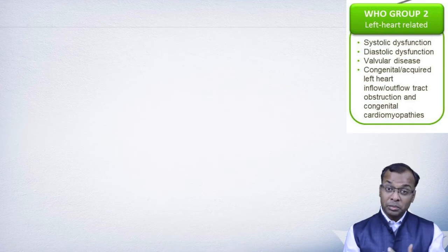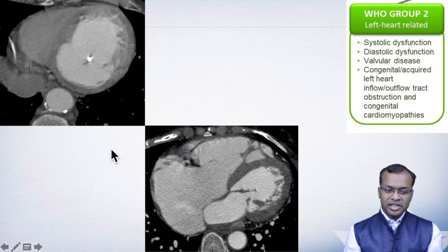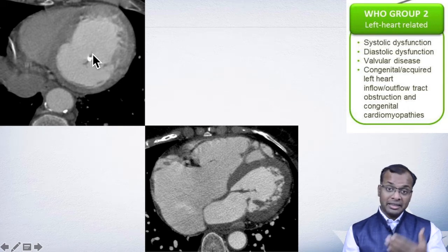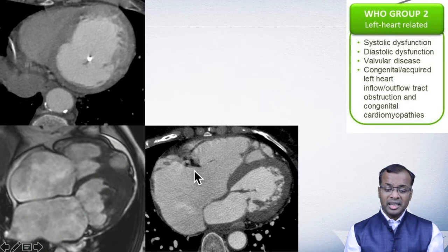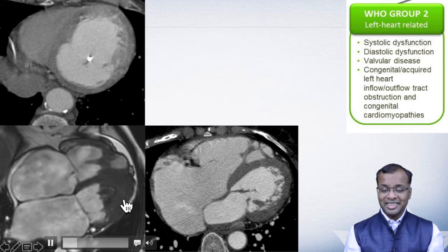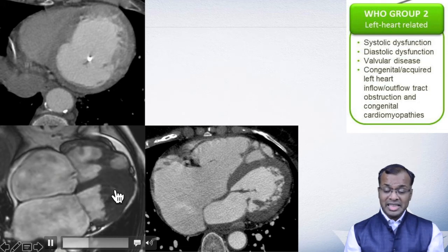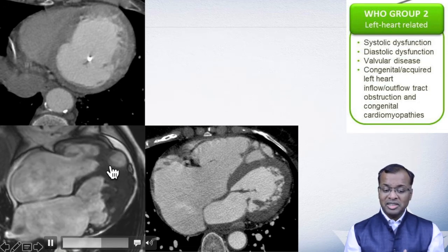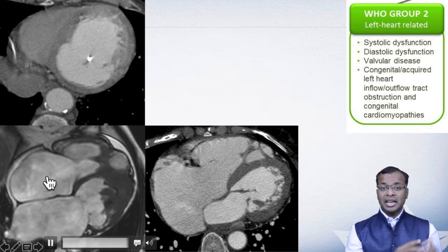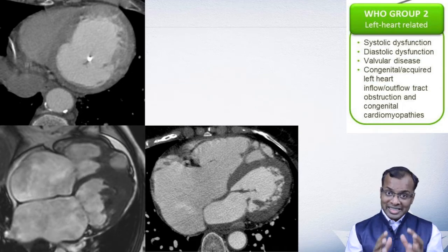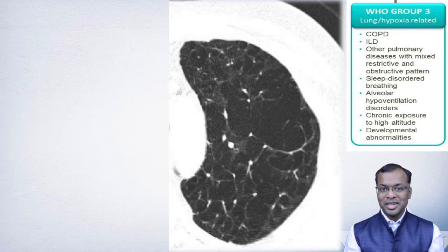Group 2 causes of PH primarily involve left heart pathology. LV dysfunction with mitral valve disease can cause pulmonary hypertension and CT can demonstrate this. We can see a patient with mitral stenosis and restrictive physiology. Another case shows endomyocardial fibrosis with both LV and RV involvement and dilated LA and RA, which accounts for pulmonary hypertension. CT is again very useful to show us what is happening.